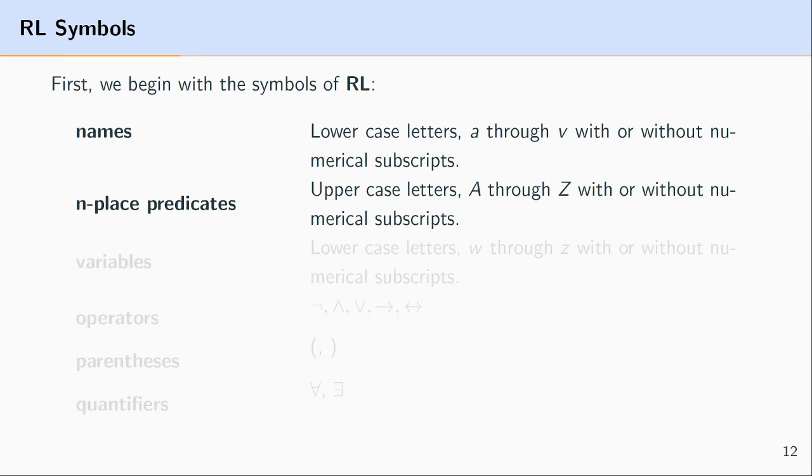The next symbol that we'll look at are called n-place predicates. N-place predicates refer to uppercase letters A through Z with or without numerical subscripts. So to look at a couple examples, A is an n-place predicate, B is an n-place predicate, and C is an n-place predicate. And we could go onward and onward all the way to Z.